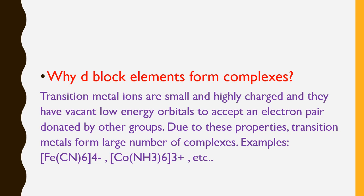For example, in the iron complex, six cyano ligands are donors ready to donate two electrons each to the central metal atom of the Fe complex ion. Similarly, in the cobalt complex, six amino ligands are each ready to donate two electrons to the central metal atom of the cobalt complex. The d-block metal has vacant orbitals ready to receive these electron pairs.